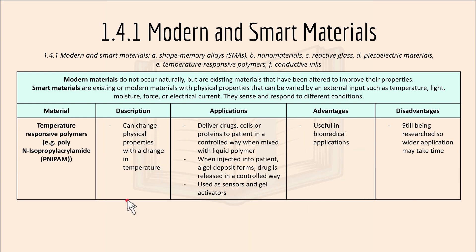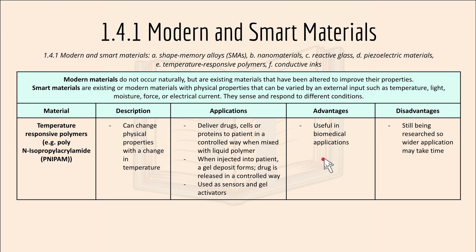Temperature responsive polymers can change physical properties with a change in temperature to deliver drugs, cells or proteins to a patient in a controlled way when mixed with a liquid polymer. They can be injected into the patient and are useful in biomedical applications. A disadvantage is that they are still being researched so applications may take time.